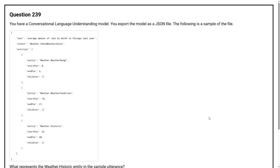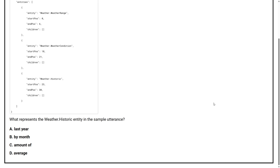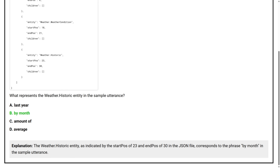Question number 239. You have a conversational language understanding model. You export the model as a JSON file. What represents the weather.historic entity in the sample utterance? Option A: last year. Option B: by month. Option C: amount of. Option D: average. The correct answer is option B, by month. The weather.historic entity, as indicated by the start position of 23 and end position of 30 in the JSON file, corresponds to the phrase 'by month' in the sample utterance.